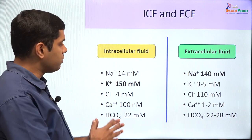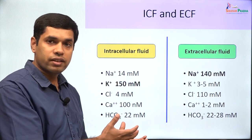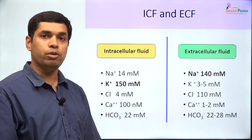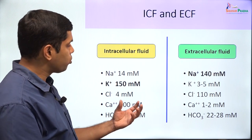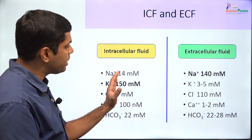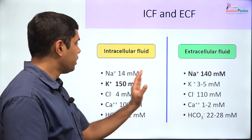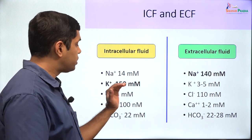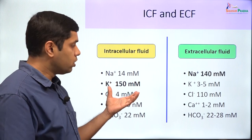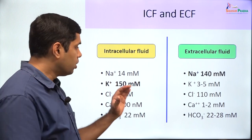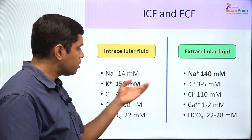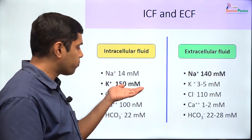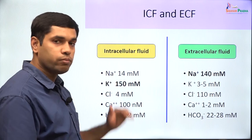To address how the cell keeps the ICF different, that is predominantly by the sodium-potassium ATPase. The sodium-potassium ATPase is an example of primary active transport. This protein constantly keeps pushing out sodium from the ICF, keeping sodium levels low, and constantly keeps bringing in potassium, keeping the ICF levels of potassium high. By using ATP, it pushes out three sodium ions and brings in two potassium ions, thereby keeping potassium high and sodium low within the ICF.